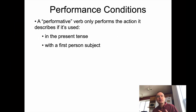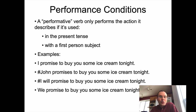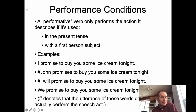It turns out there are conditions on whether or not you can use performative verbs meaningfully. A performative verb only performs the action it describes if it's used in the present tense with a first-person subject. So you can say 'I promise to buy you some ice cream tonight' — that works, that's a legitimate promise. But you cannot say 'John promises to buy you some ice cream tonight' — it depends on what John thinks; he has to actually make the promise. And 'I will promise to buy you some ice cream tonight' is more a promise to make a promise rather. 'We promised to buy you some ice cream tonight' would work because it's still present tense with a first-person subject.